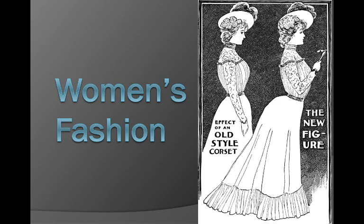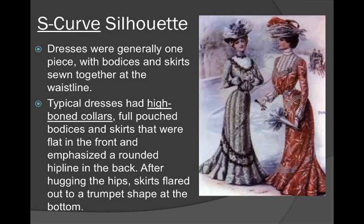Number two, the popular silhouette for women was something called the S-curve. This is very similar to what the 1890s transformed into, where they eliminated the bustle and had a flat front, but now dresses have this S-curve. If we look at this body, it goes out and then out — that's the S-curve. We've got a blouse here that's really puffy and the back is really big. That's why it's called an S-curve.